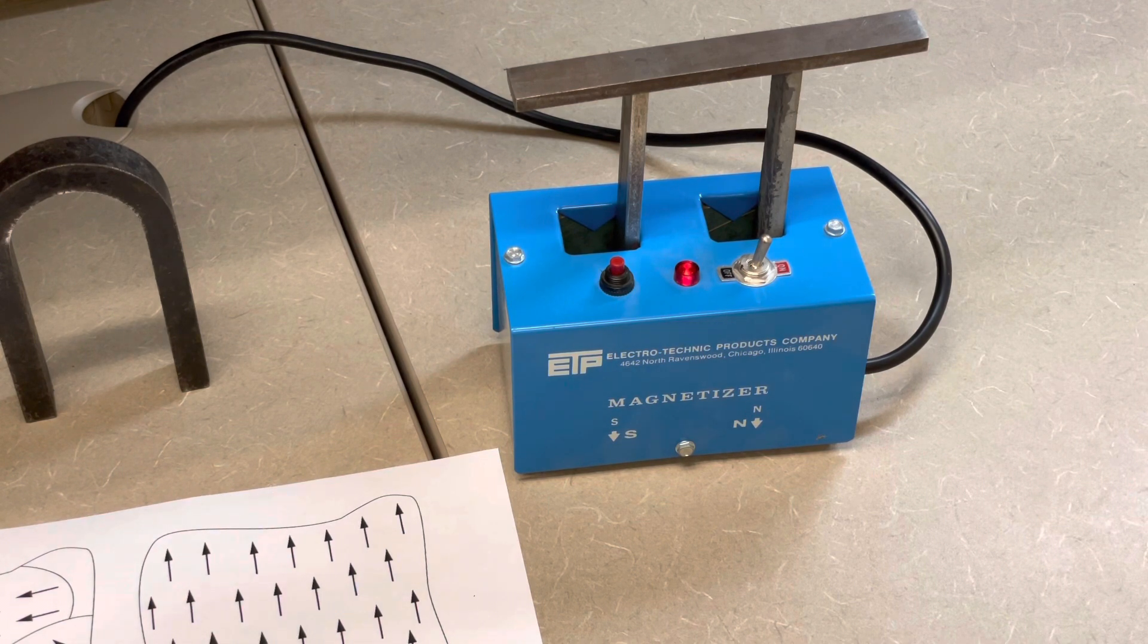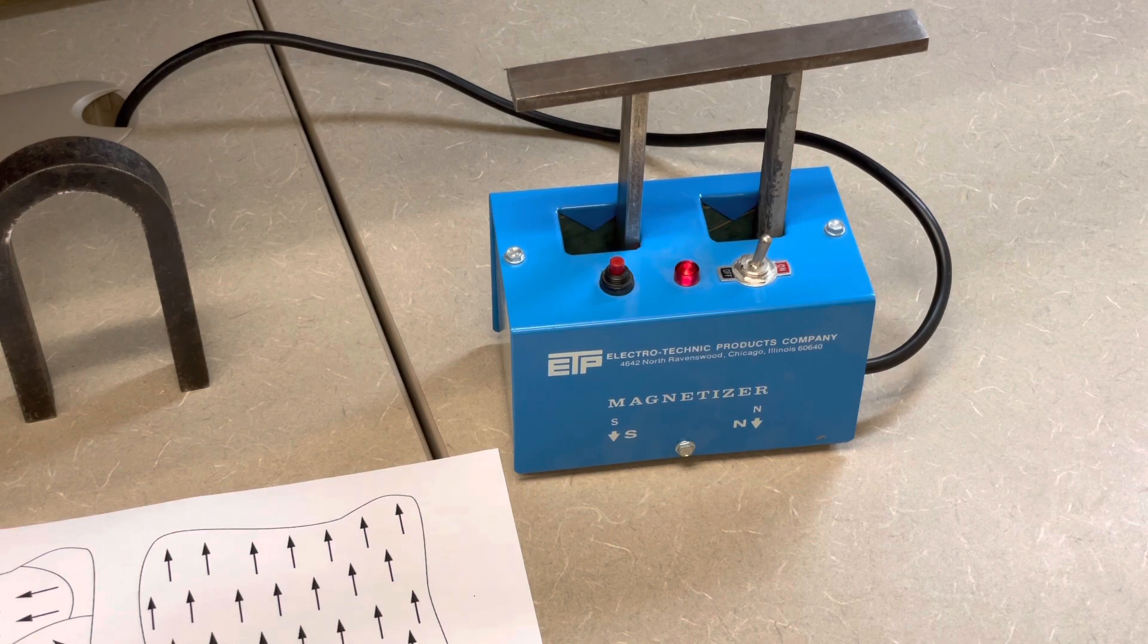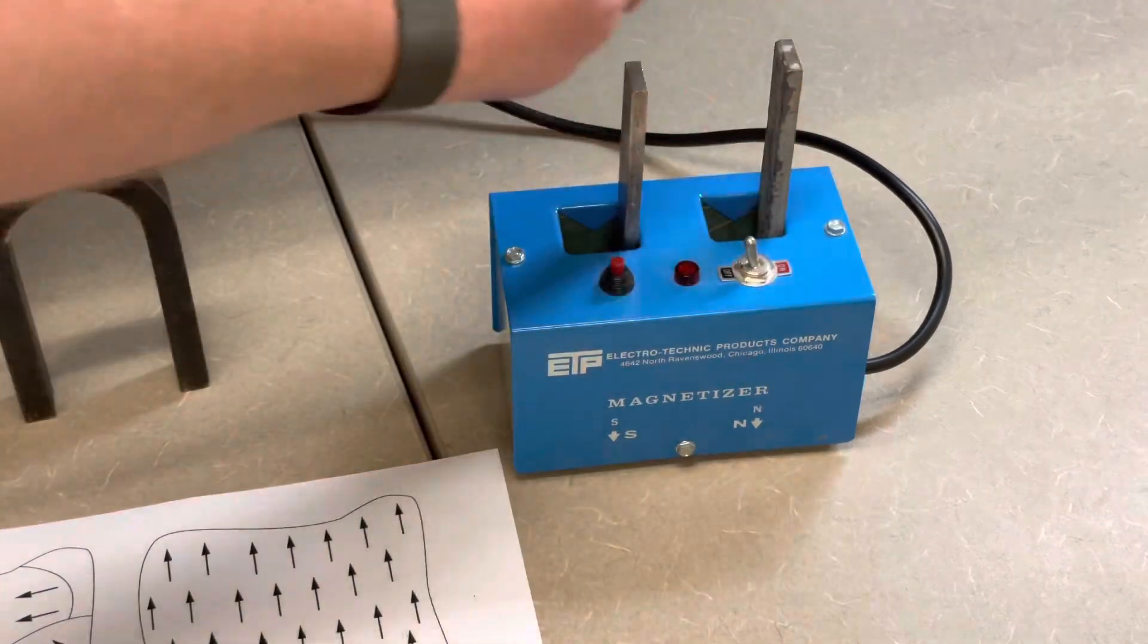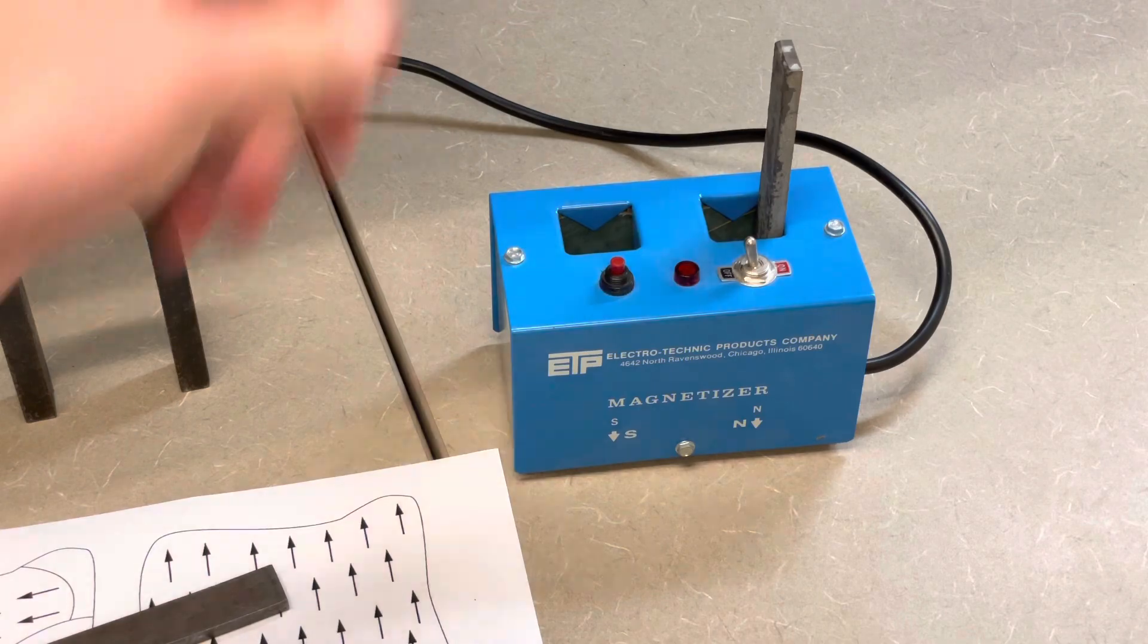When you hit that button, what occurs is it just shoots some electric current through there. And once you've done so, you should have the bottom two bar magnets that are magnetized. Those domains of those electrons have been aligned. So if I were to take the magnets now, I should be able to connect them to the metal cabinet of mine, and it will stick.